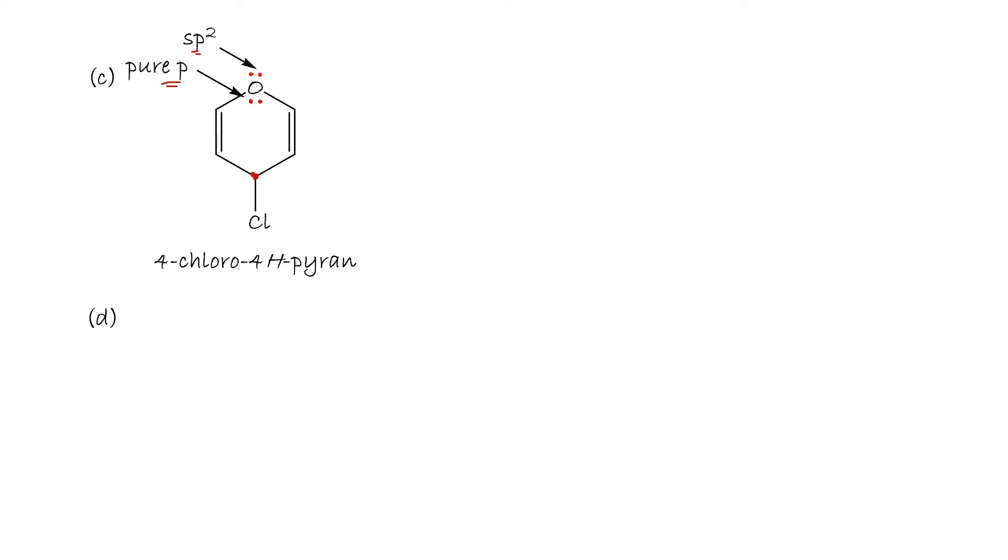To do that, we react the compound with silver nitrate. Silver cation will pull the chlorine out, forming silver chloride and this carbocation, which is in resonance with the oxybenzene analog we call pyrylium ion. With six pi electrons, it is aromatic.